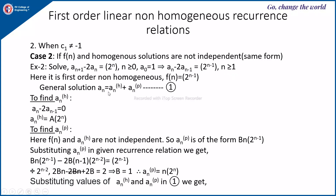The general solution is homogeneous solution plus particular solution. The homogeneous solution is obtained by replacing f(n) with 0, giving aₙ - 2aₙ₋₁ = 0. Here d = 2, so the homogeneous solution is A·2ⁿ.